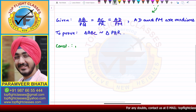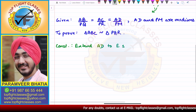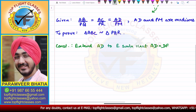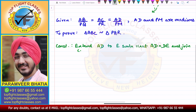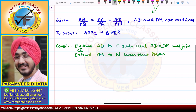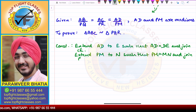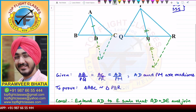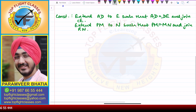For the construction, I will extend AD to E such that AD is equal to DE, and then I will join EC. Similarly, in the second triangle, I will extend PM to N such that PM is equal to MN, and then I will join RN.